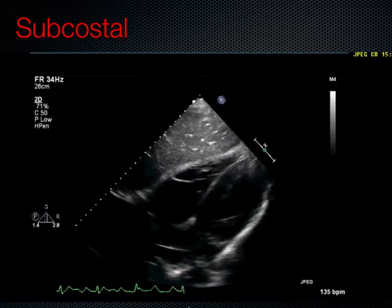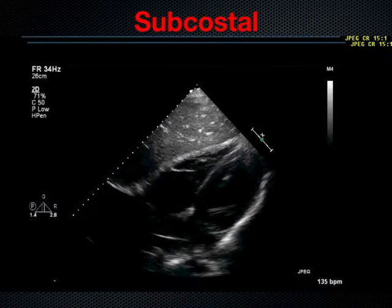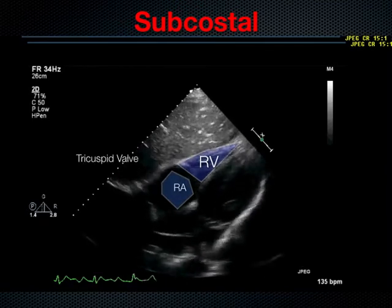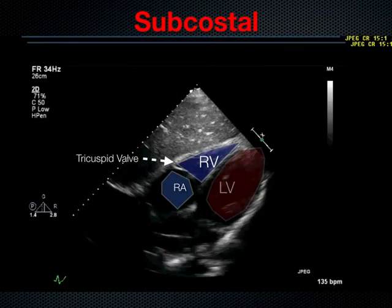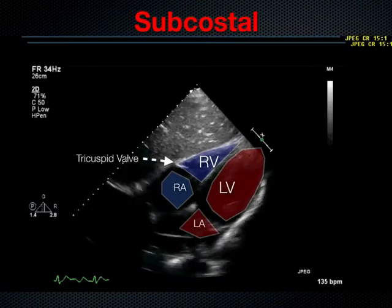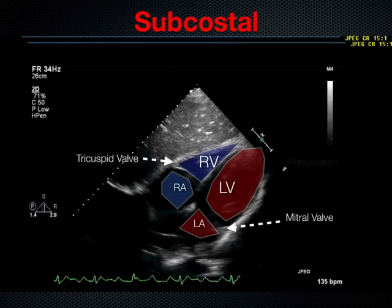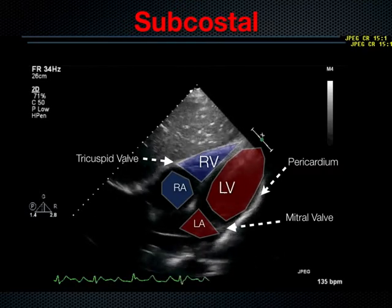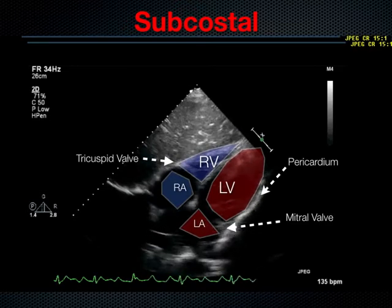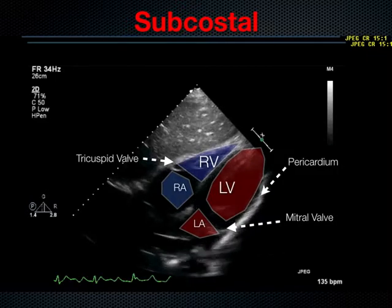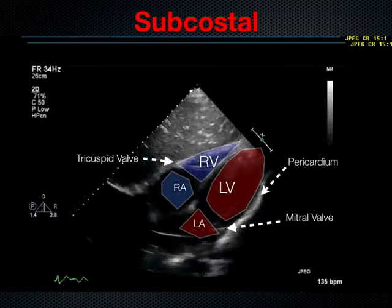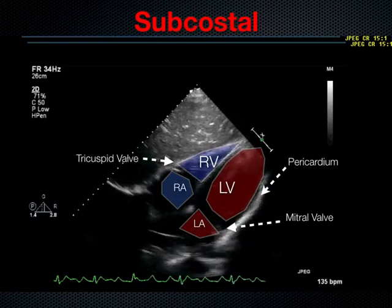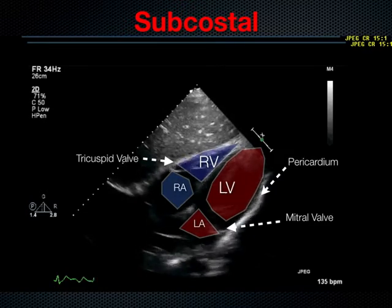In more detail, we have the right ventricle and right atrium with the tricuspid valve between, the left ventricle, left atrium, and the mitral valve between. The bright white pericardium circles the heart. There are two layers to the pericardium — the visceral and the parietal — which are normally together without visible fluid between them. When evaluating pericardial effusions, the two layers are separated by fluid, giving a white-black-white pattern with the fluid appearing black.